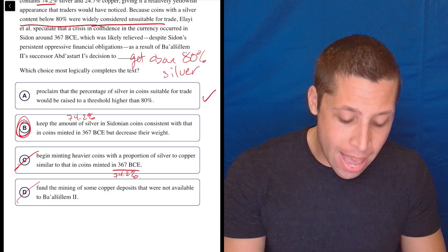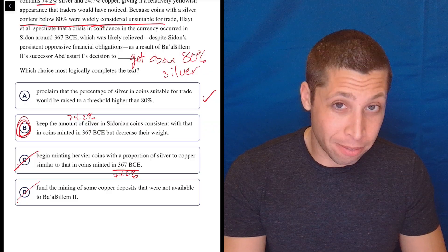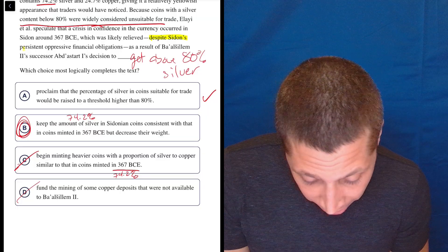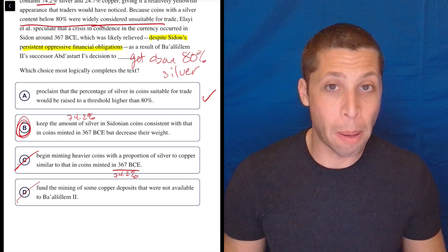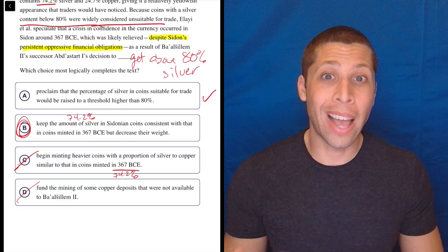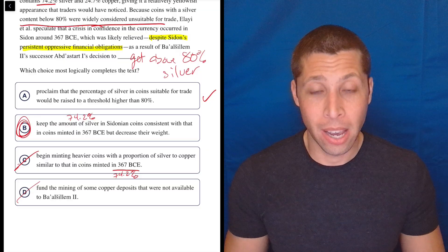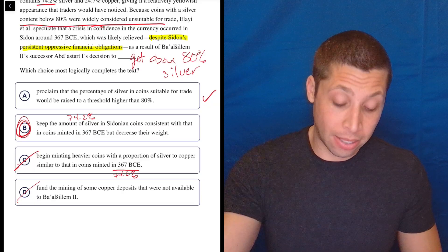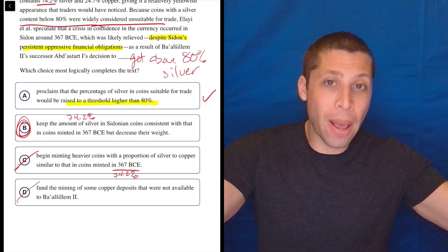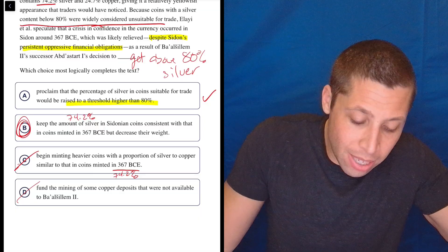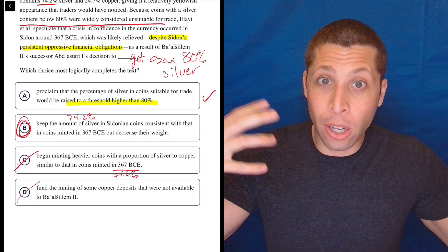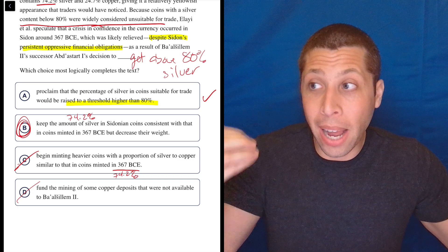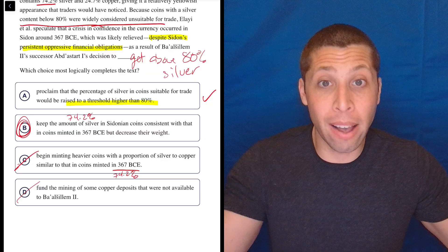And I didn't even think twice about it, but A is wrong. And the explanation the College Board gives is kind of BS in my opinion, but here's what it is. They emphasize this right here, which is emphasized by the double dash, despite Sidon's persistent oppressive financial obligations. So we have to solve this silver problem without adding in more silver because silver is expensive and they have other financial obligations. They're broke. So how are we going to get more silver in? So the College Board says that A is wrong because we can't get back to 80%. We don't have the silver.